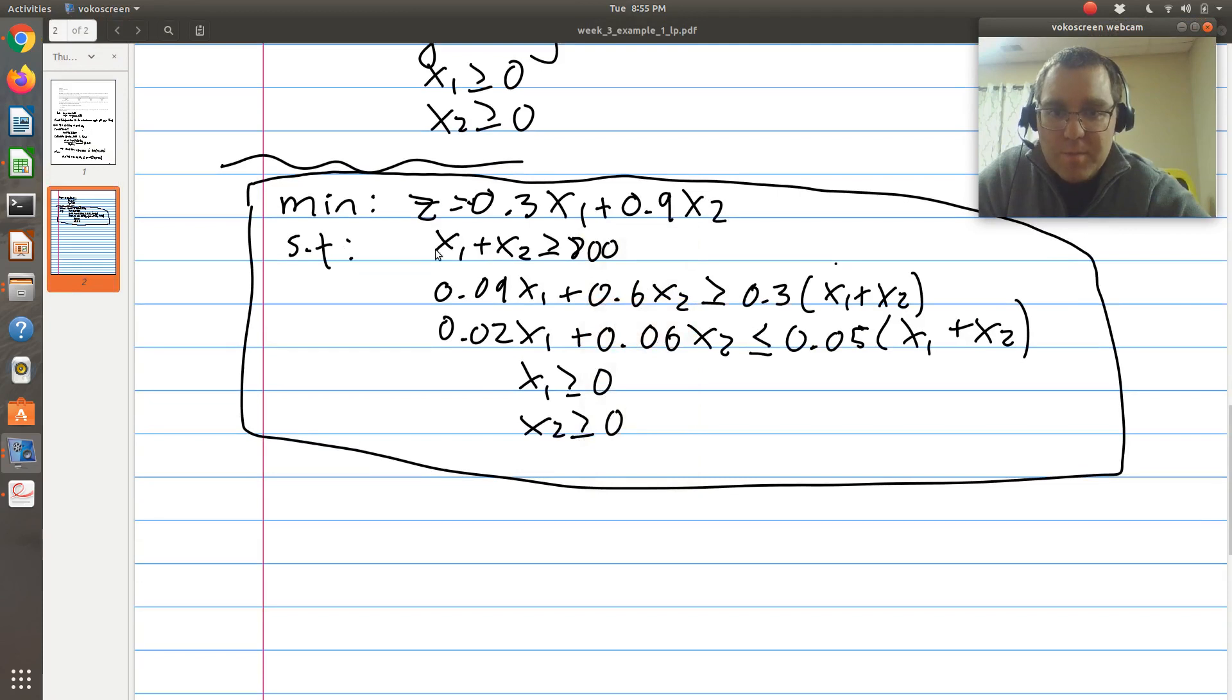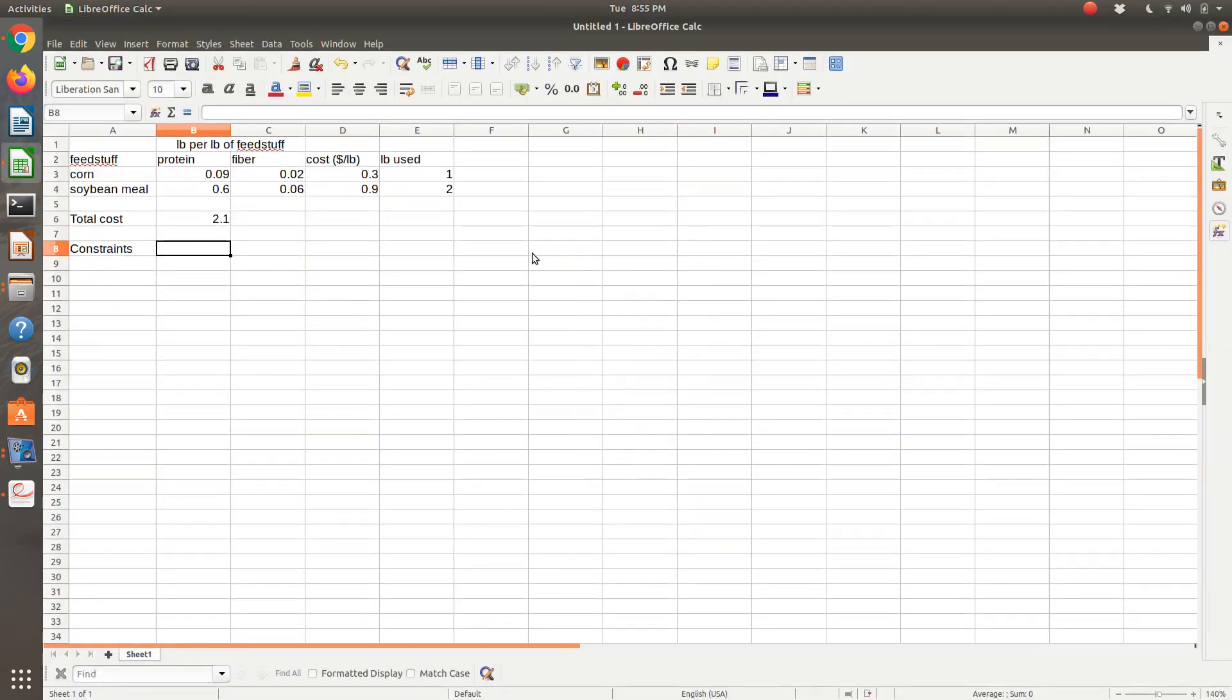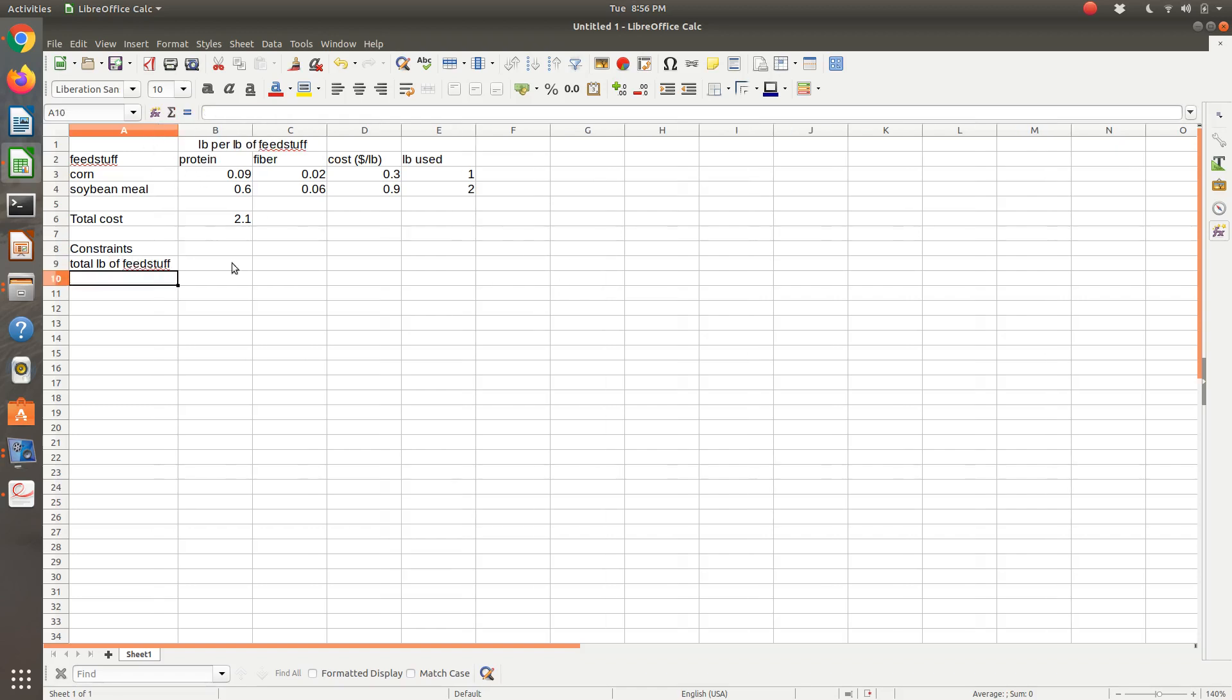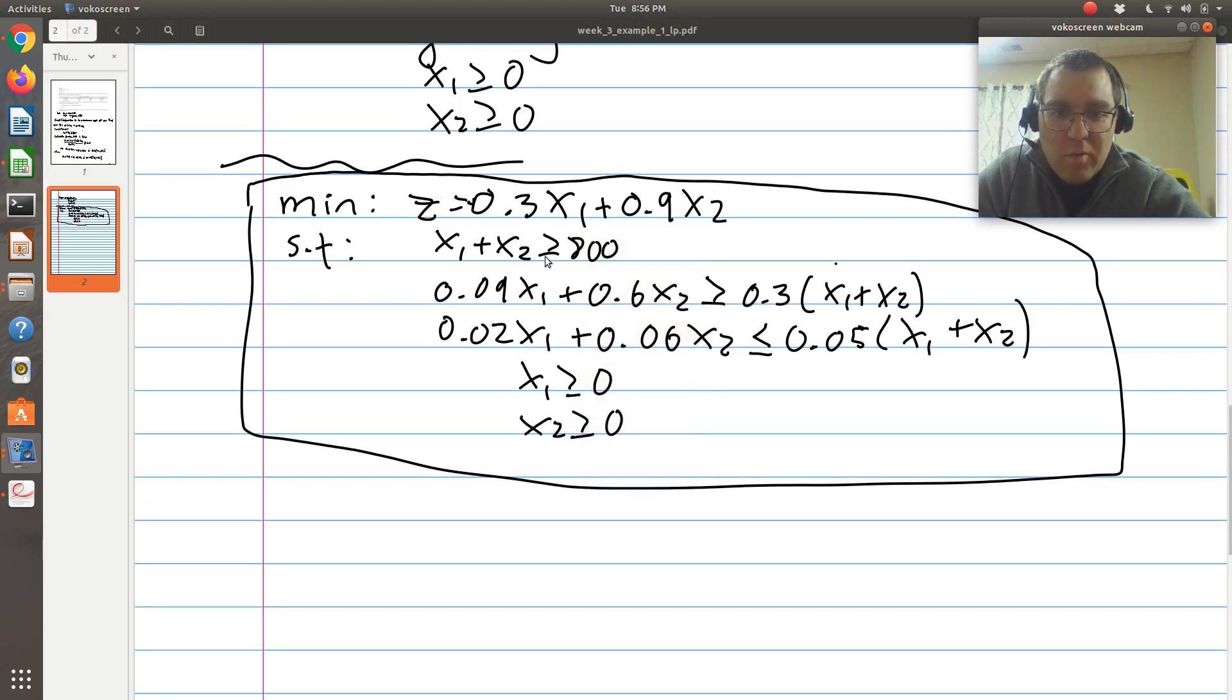So in terms of constraints, first we have that the total pounds, the sum of the amount of corn and amount of soybean, so mass balance, so the amount of feedstuff that I'm making has to be greater than or equal to 800 pounds. So I'll have total pounds of feedstuff. So my total pounds of feedstuff, the left-hand side, is the pounds of corn plus the pounds of soybean used. Then I'm going to type in my 800, which that's going to have to be greater than or equal to. That was constraint 1.